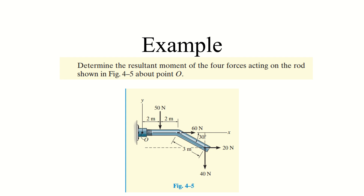The final force is 40 N, and its perpendicular distance from point O is 2 + 2 + 3 cos 30°. So the moment produced by the 40 N force is 40 × (4 + 3 cos 30°), and it rotates in the clockwise direction.